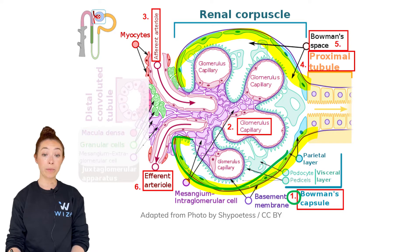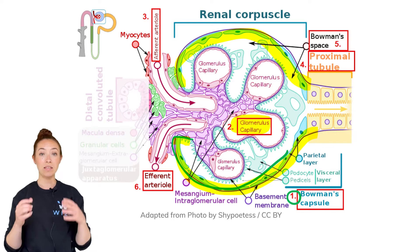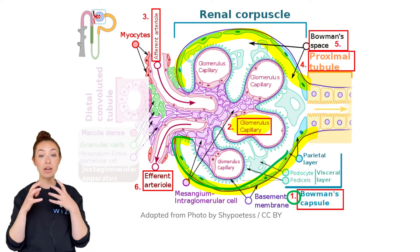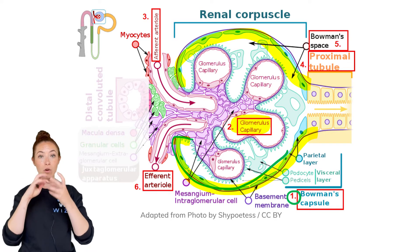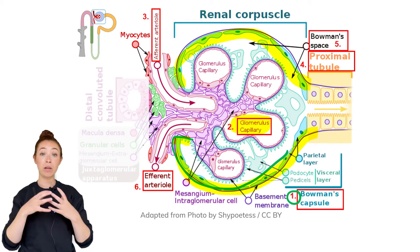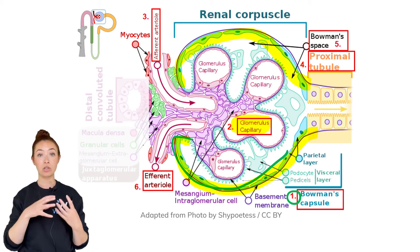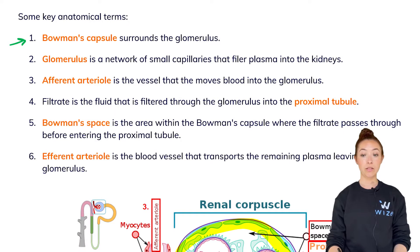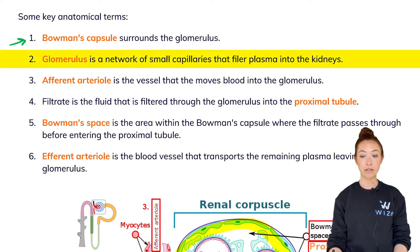The glomerular capillaries are located right here. It is a collection of capillaries all bunched together — that is where blood comes from that actually gets filtered into the nephron. The glomerulus is a network of small capillaries that filter plasma into the kidneys.